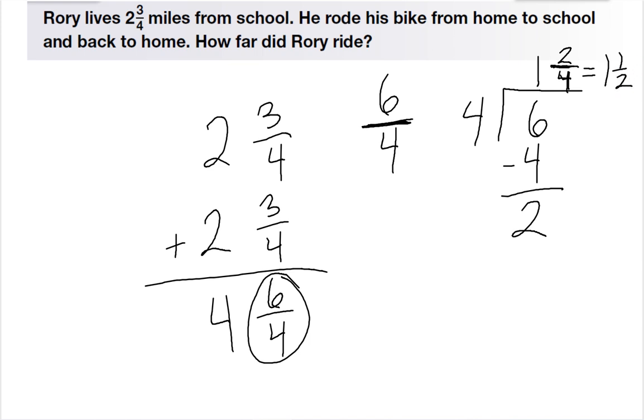So to find the total number of miles, I'm going to take the 4 miles that he rode, and add it to the 1 and 1 half. So he rode a total of 5 and 1 half miles each day as he goes to and from school.